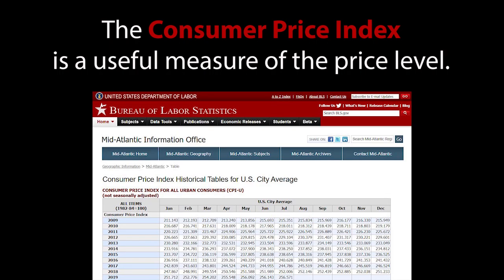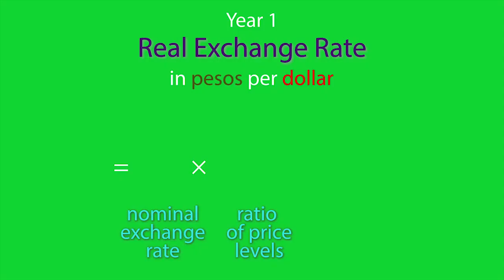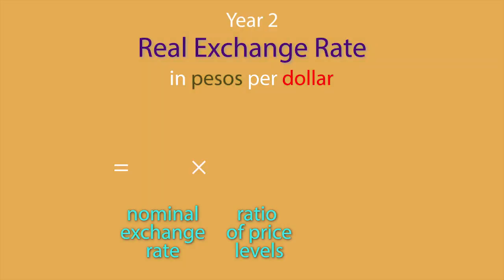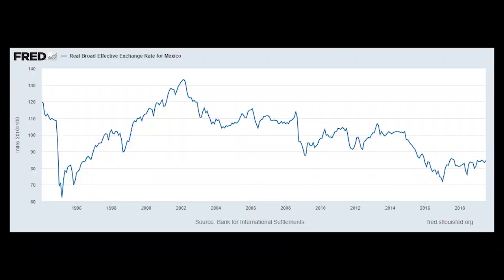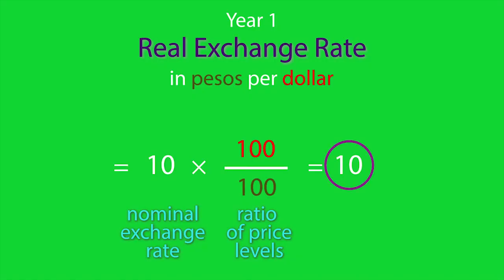Price indices such as the Consumer Price Index are useful measures of the price level. Suppose that in year one the nominal exchange rate is 10 pesos per dollar and the price level, measured with the Consumer Price Index, is 100 in each country. The real exchange rate would be 10 times 100 over 100, which is 10. Then in year two the nominal exchange rate is 20 pesos per dollar, the Consumer Price Index in the United States is still 100, and the Consumer Price Index in Mexico is 200. Although the nominal exchange rate has doubled, the real exchange rate would be 20 times 100 over 200, which is 10. So the real exchange rate reveals that in this case you would need the same number of dollars as before to maintain operations despite the change in the nominal exchange rate.